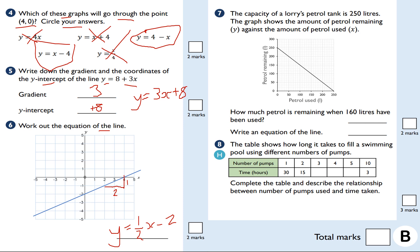Question number seven. Looking at a worded problem here. Question seven and eight are actually GCSE math-style questions. They always put worded questions. And question seven, the capacity of a lorry's petrol tank is 250 litres. The graph shows the amount of petrol remaining, y, against the amount of petrol used, x. How much petrol is remaining when 160 litres have been used? I'm going to zoom in here. I'll be around here. I'm going to estimate, 90, or even 85.